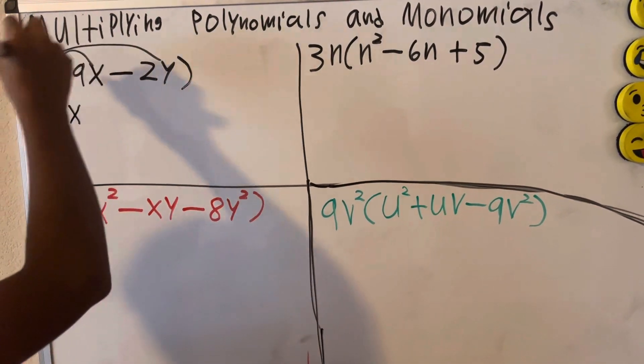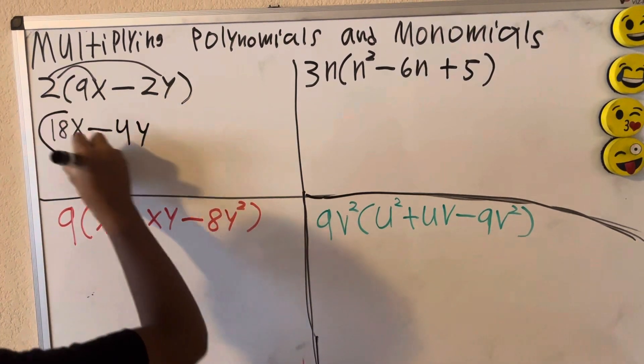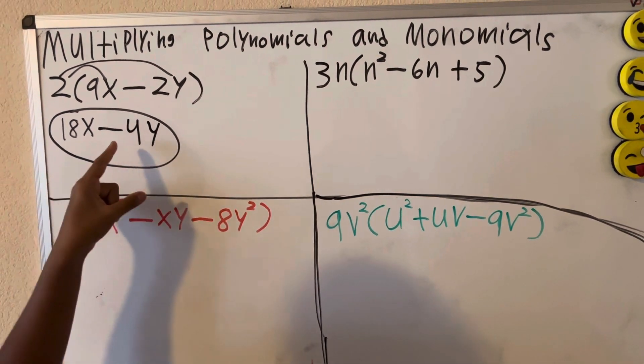Negative 2y times 2 is minus 4y. So our solution in number 1 is 18x minus 4y.